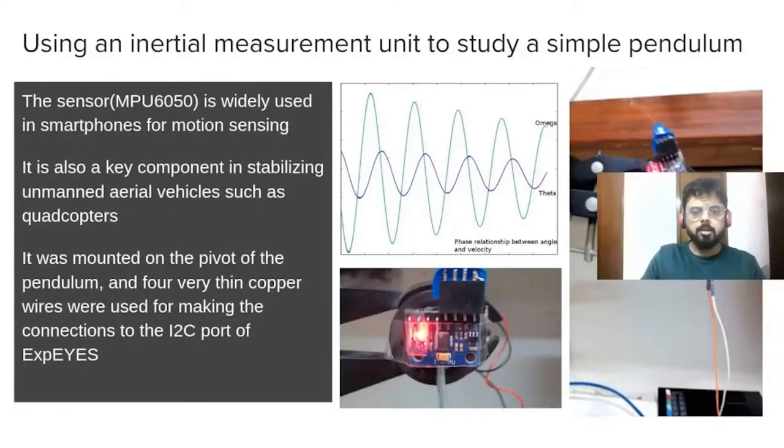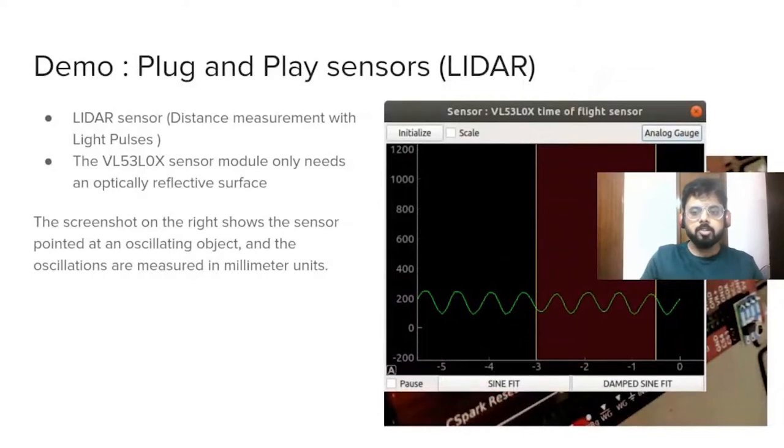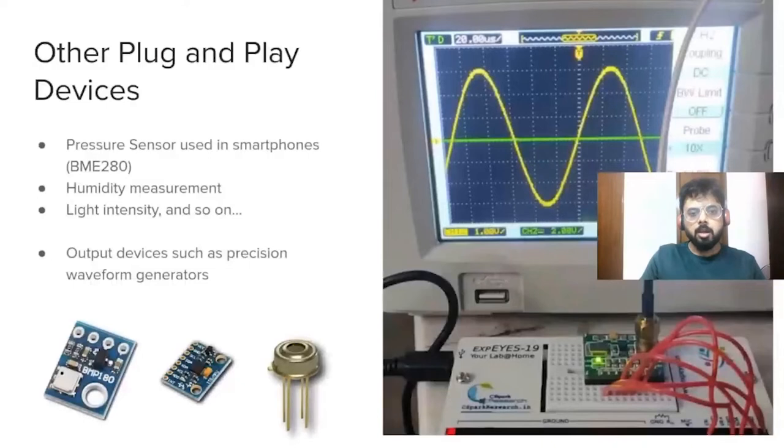There are several other sensors such as this LIDAR which measures distance using infrared light pulses, costs three to four hundred rupees only, and for example this high resolution waveform generator.